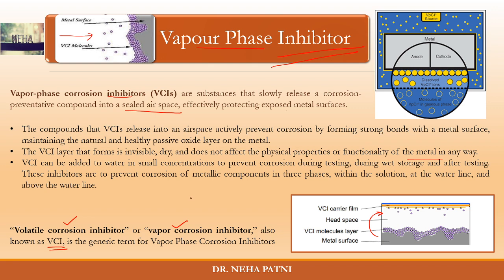There is one more positive aspect to vapor phase inhibitors, which is why they are more in demand compared to cathodic and anodic inhibitors. Sometimes you cannot prevent your metal from corroding using a cathodic or anodic inhibitor, and that is where vapor phase inhibition comes in. Since there is no physical state restriction, you can add it to water in a small concentration. During testing, storage, or after testing, the VCI molecule is still present in the solution and continues to inhibit corrosion.